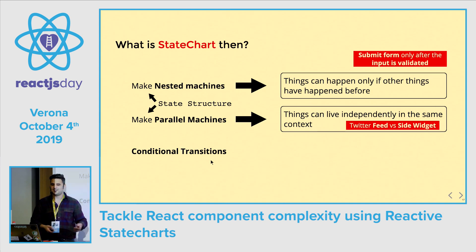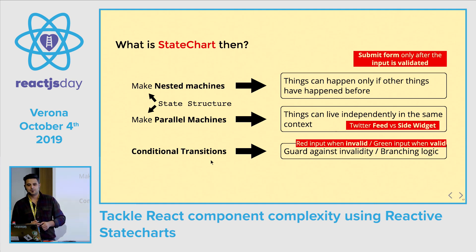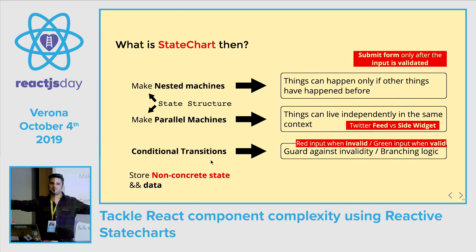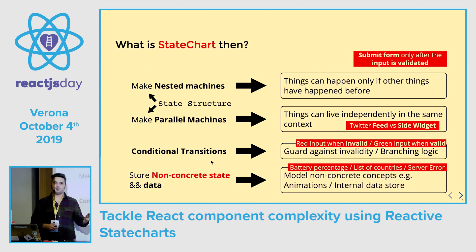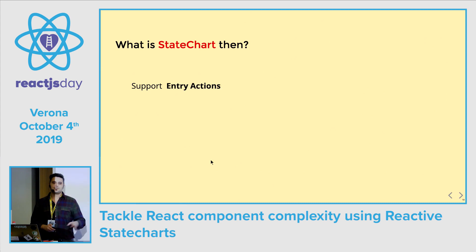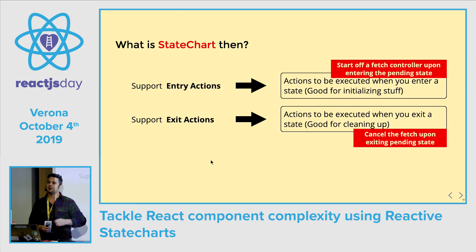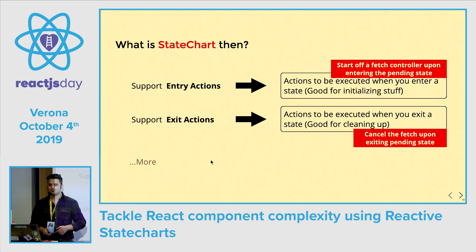State charts also give you a way to store non-concrete or extended state — things like a volume slider or animation can't be modeled with a finite number of states. So they give you a context of primitive data. They also support storing data like server responses or errors. They support entry actions for initializing things and exit actions for cleanup — similar to returning a cleanup callback from useEffect in React.